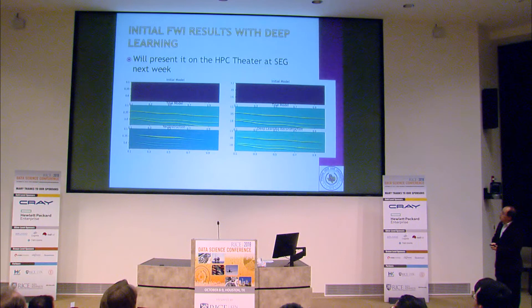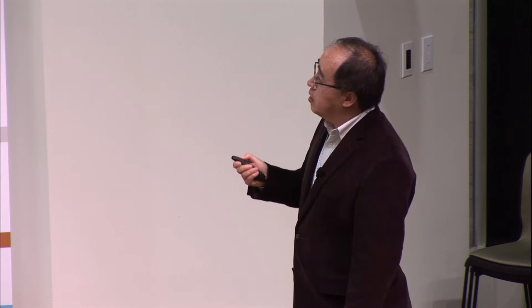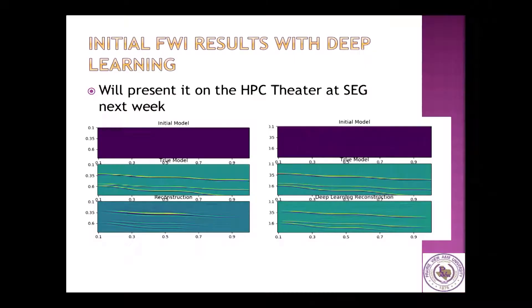For the FWI case, we used a deep learning network in the FWI workflow. This is a very initial result — it shows FWI with some horizontal reflectors. If we don't have many receivers, the boundary parts are not well illuminated and are not easy to see. But interestingly, if we use a deep learning network to reconstruct it, those reflectors are pretty clearly displayed from the deep learning-based reconstruction processing.